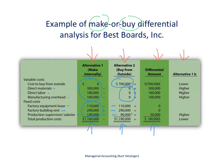Looking at the differential column, it will cost $90,000 more if we choose to outsource. It will be $90,000 less to make these products internally. As a result, our preferred course of action is to continue to produce these wakeboards internally in our own facility.